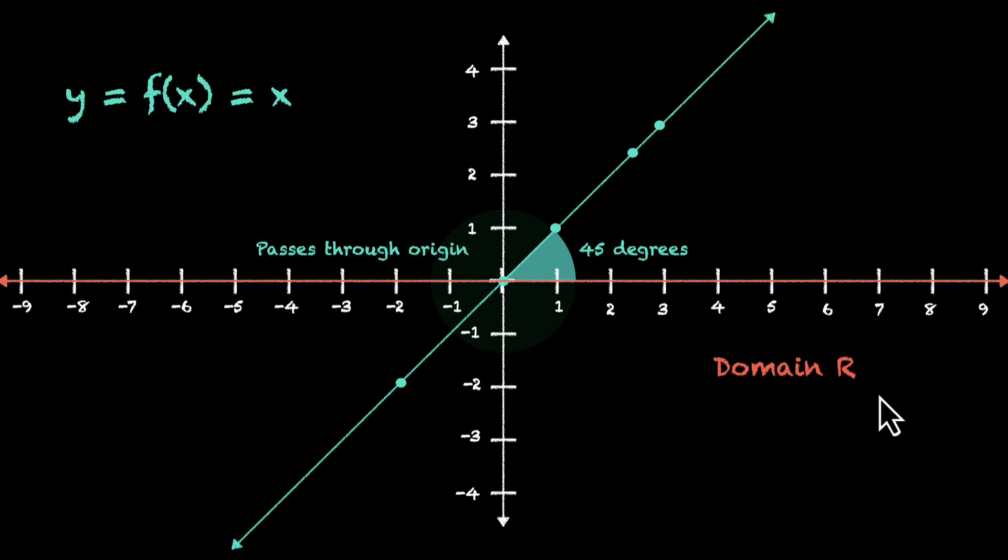And a very technical way of writing this is the domain of this function f is all x where x ∈ R. We can say the same thing for the range. The range is all the outputs that you're actually getting. So you will get all the values that you can think of. In fact, you get all real values. So the range is also R. The range of this function f is the set of all y where y ∈ R. So this is the domain and range of this function. And because it gives back the same value that you input, this is also called the identity function.